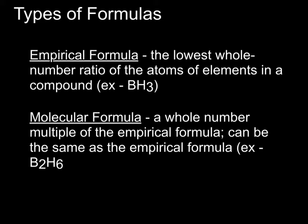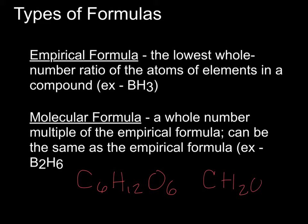Another example would be carbohydrates. Glucose is C6H12O6 — that is the molecular formula, the actual formula of glucose. The empirical formula would be CH2O, because 6, 12, and 6 can all be divided by the common factor of 6. So the lowest whole number ratio for glucose is CH2O — that's the empirical formula.